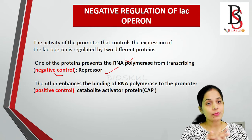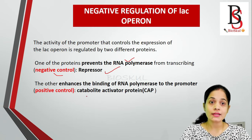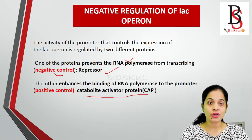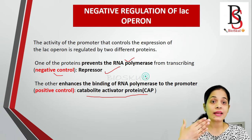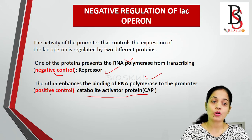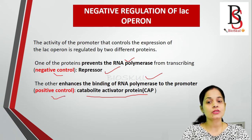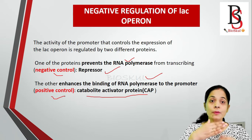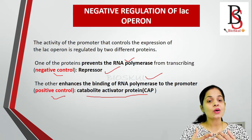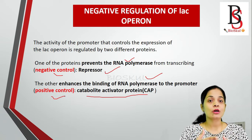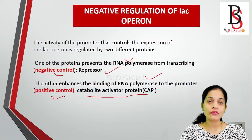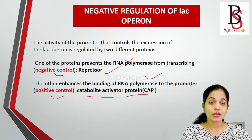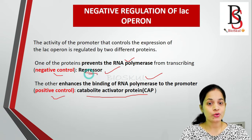In positive control, the other protein involved is known as the catabolite activator protein, or CAP protein, which actually enhances the binding of RNA polymerase to the promoter. In an upcoming session we will see how the CAP protein helps in the positive regulation of the lac operon. For now, we will focus on the negative regulation, which is mediated by the repressor protein.